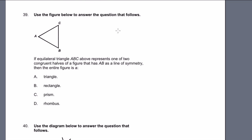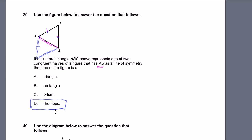Problem 39. Use the figure below to answer the question. They give us a little triangle. If equilateral triangle ABC — equilateral tells us all the sides are equal — represents one of two congruent halves of a figure that has AB as a line of symmetry, then the rest of the figure mirrors the triangle. That length equals that length equals that length equals that length — all four sides are the same. So the entire figure is a rhombus.